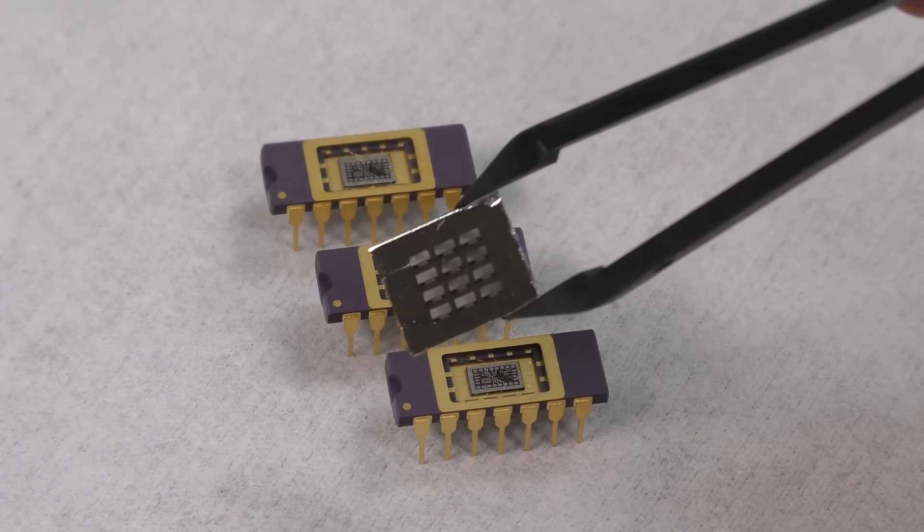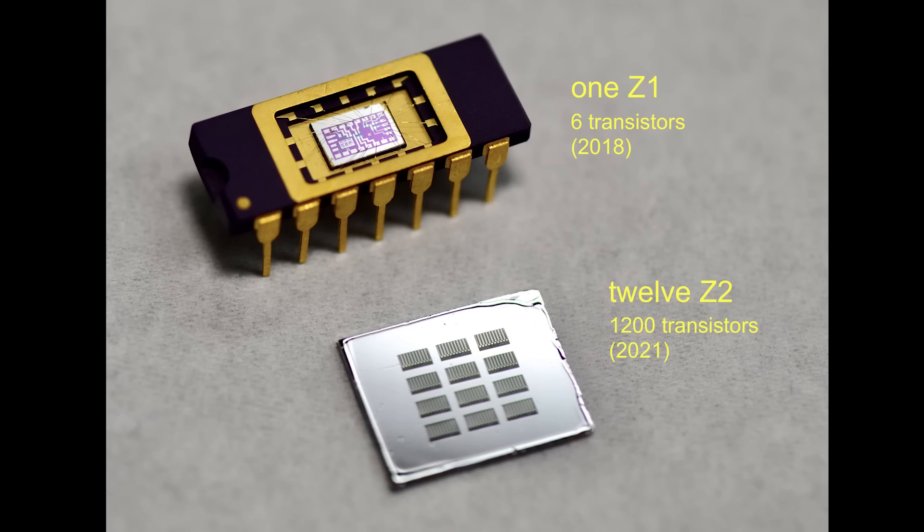A few years ago I made the world's first homemade silicon chip in my garage fab. I just made version 2, which has 100 transistors on it, and they're smaller, better, and faster than the old one.